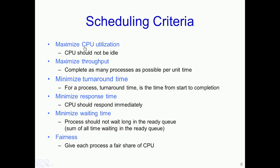The first scheduling criterion is CPU utilization. The scheduling algorithm should be designed so as to maximize CPU utilization — in other words, the CPU should be idle for as minimum time as possible. The next criterion is throughput. Essentially, scheduling algorithms would try to complete as many processes as possible per unit time.